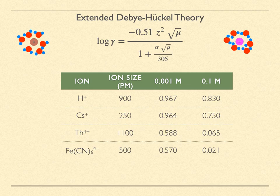As you can see, for some cases our approximation that the activity coefficient is 1 will be a good one, while in other cases it can be very poor.